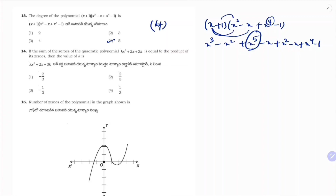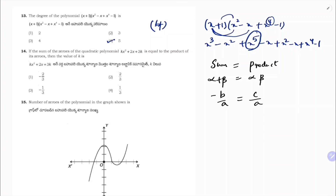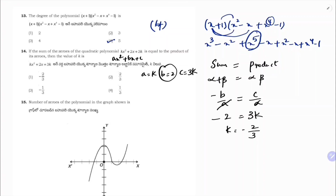If the sum of the zeros of the quadratic polynomial kx² + 2x + 3k equals the product of the zeros: sum = product means −b/a = c/a. Comparing with standard form ax² + bx + c: a = k, b = 2, c = 3k. So −2/k = 3k/k, giving −2 = 3k, so k = −2/3. Correct option is 1.